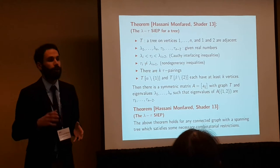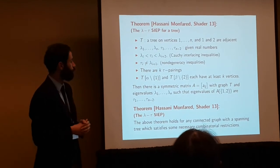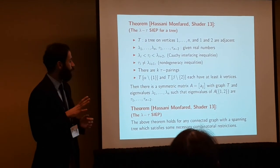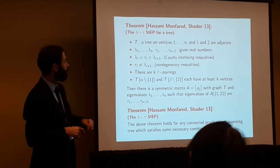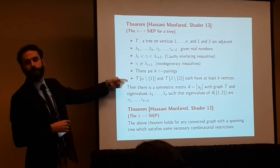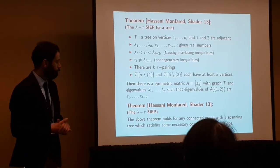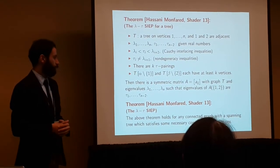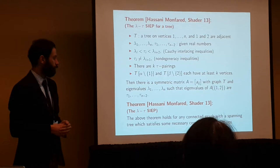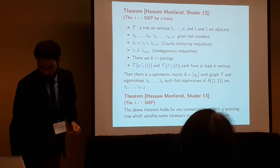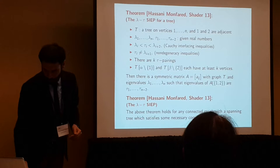Here, our connected graphs are not all connected graphs. We have some restrictions. The restrictions are that we have a spanning tree which has this situation. That connected graph should have this kind of spanning tree, otherwise it's not going to work. The result using Jacobian method has been extended to connected graphs without necessary combinatorial restrictions.